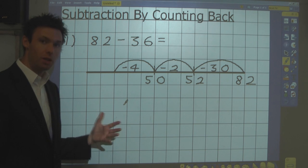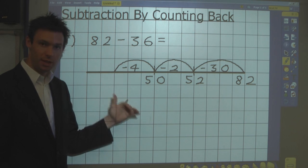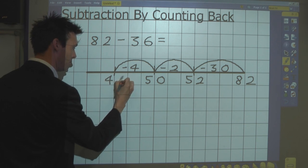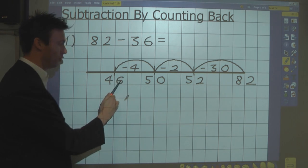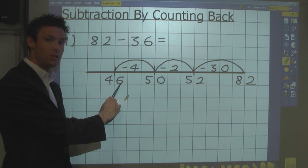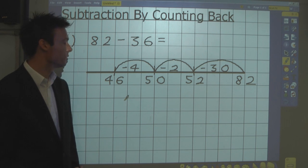And again, my knowledge of number bonds tells me that 4 goes with 6 to make 10. So my answer is 46. Because 50 take away 4 would be 46 in the units column, and I know that because I've learned my number bonds.